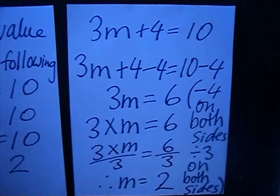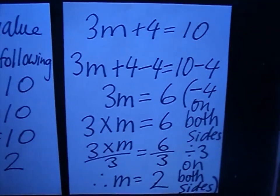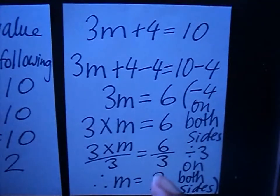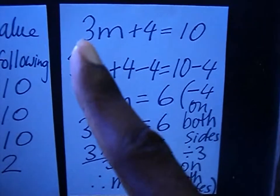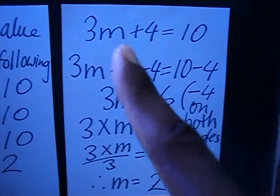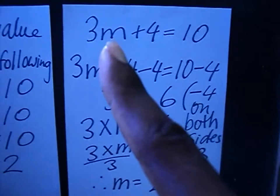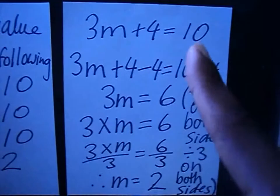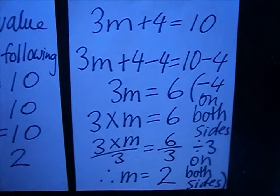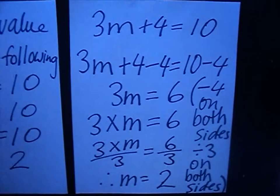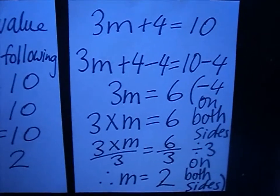That's your answer: m is equals to 2. You can always prove your answer — put 2 in: 3 times 2 plus 4. Three times 2 is 6, plus 4 is equals to 10. Always, always, always try and prove your answer.